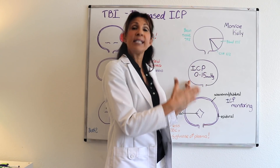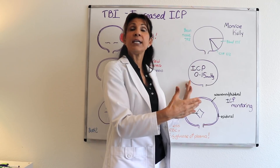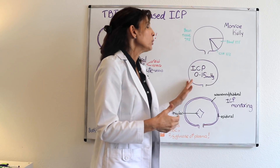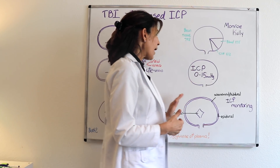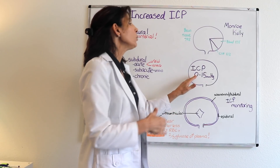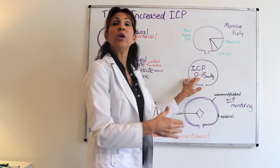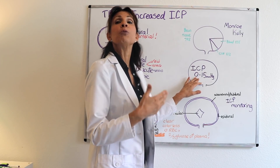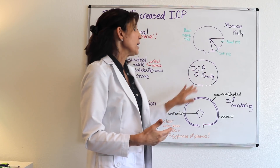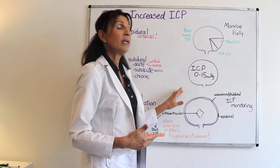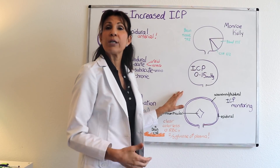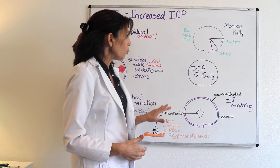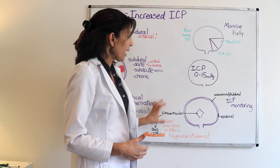Normal intracranial pressure is 0 to 15 millimeters of mercury — some books say 10 to 15 mmHg. The only way to measure ICP is with an intracranial pressure monitor.